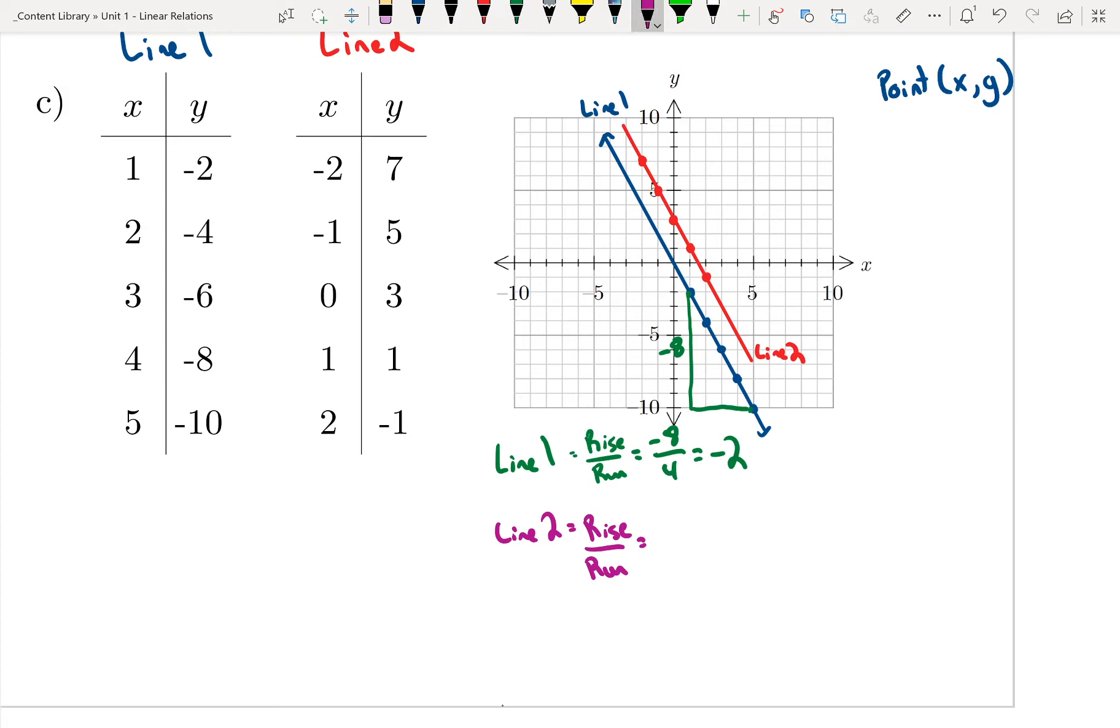If I do the same thing for my other line, in this case it's easier to go do the run first. So the run is 4. The rise is negative 8. So negative 8 over 4, which I can reduce to negative 2.